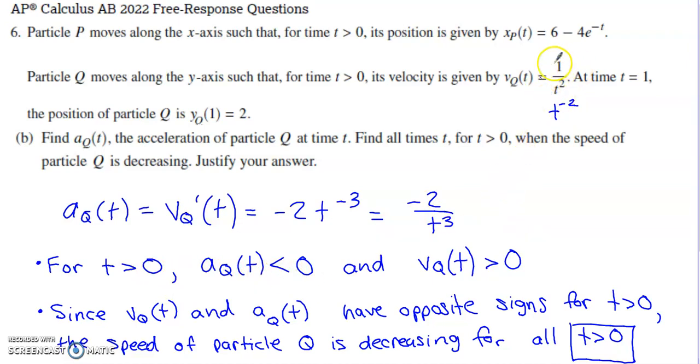Now, the velocity function right here, if we put a positive in place of this T, we're dealing with a positive divided by a positive. So acceleration is always negative, velocity is always positive. Velocity and acceleration are always going to have opposite signs for positive values of time. Therefore, the speed of particle Q is decreasing for all times that are positive.